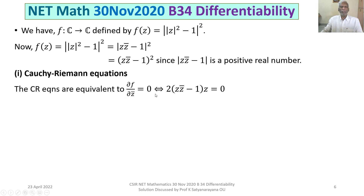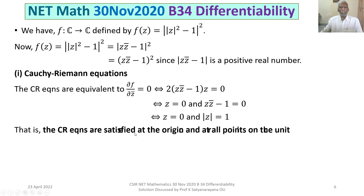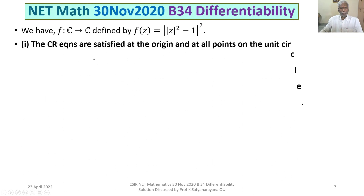That is, ∂f/∂z̄ = 0 if and only if differentiating with respect to z̄ gives 2(z·z̄ - 1)·z = 0. The derivative of z·z̄ - 1 with respect to z̄ is z, so this condition holds if and only if z = 0 or z·z̄ - 1 = 0, i.e., z = 0 or |z| = 1. Thus the Cauchy-Riemann equations are satisfied at the origin and at all points on the unit circle.